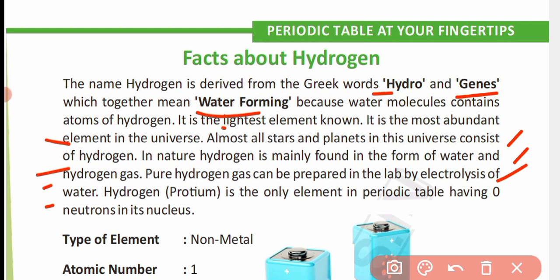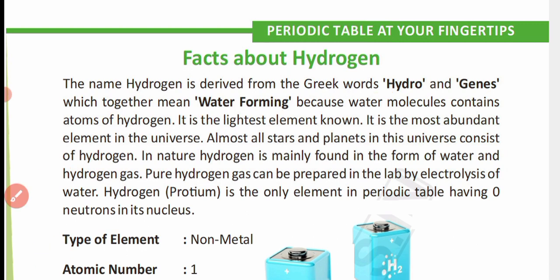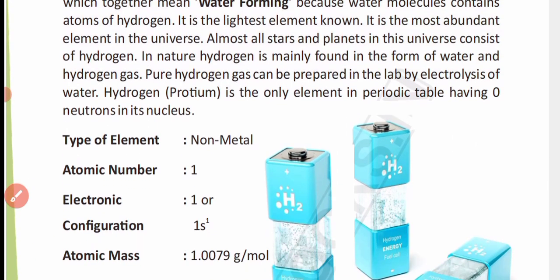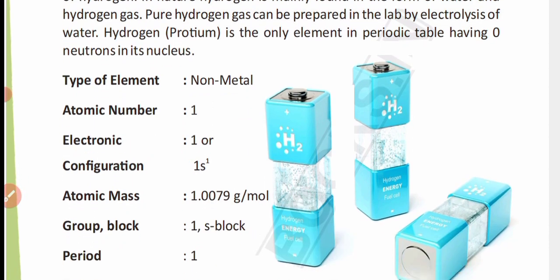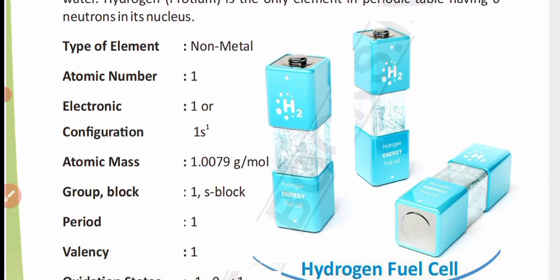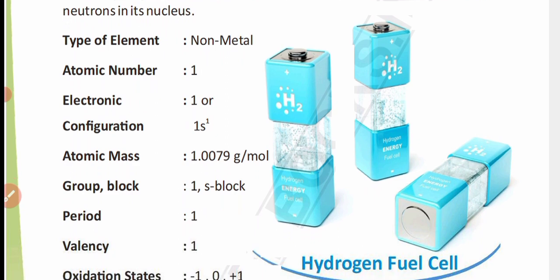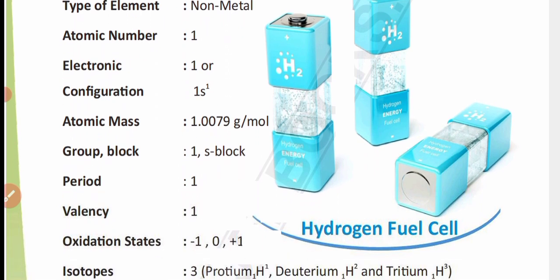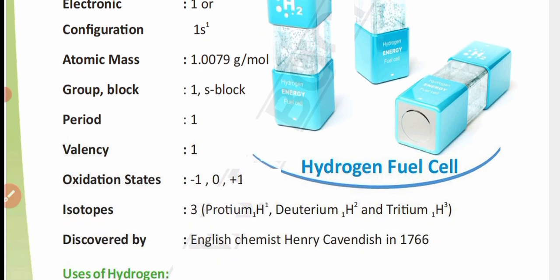Hydrogen is a non-metal. Its atomic number is 1. Its electronic configuration is 1s1, atomic mass is 1.0079 g per mole, it belongs to Group 1, S-block, Period 1, and has a valency of 1.